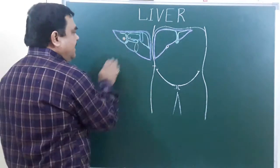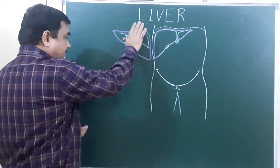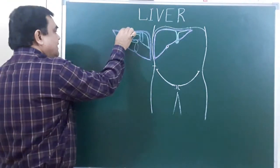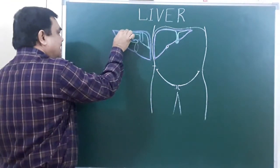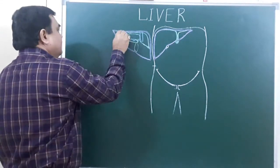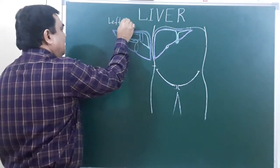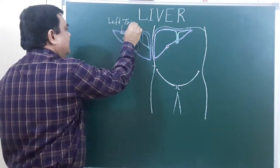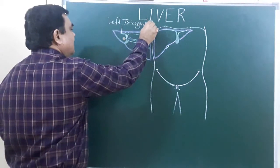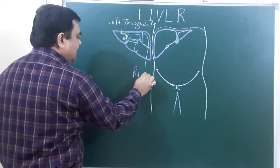On the posterior side and inferior side — this surface is posterior. Here you can see this is the line of reflection of the peritoneum; this is the left triangular ligament. And this is the right triangular ligament.